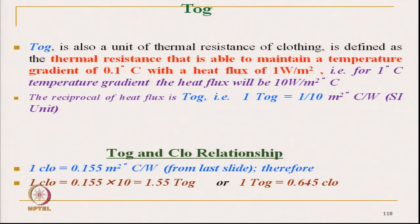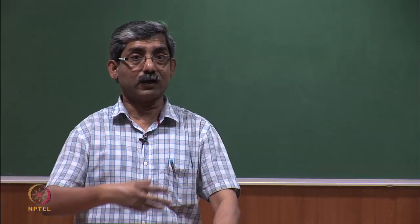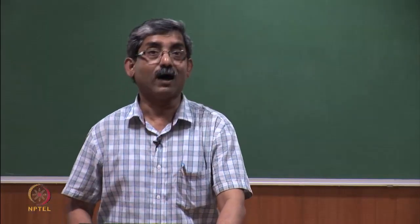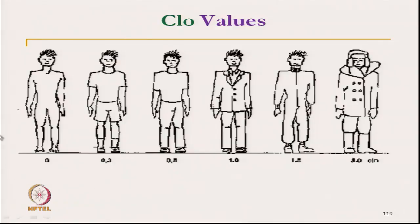With these practical units, we can evaluate the insulation of clothing, and standard values are available. For example: a person with no clothing has a clo value of 0; a person with a short light t-shirt has a total clo value of around 0.3; a full trouser and t-shirt gives about 0.5 clo; heavier ensembles reach 1.8 clo, and the heaviest around 3 clo — so total clo value increases with more clothing.